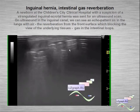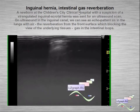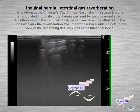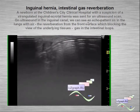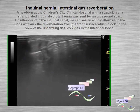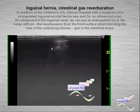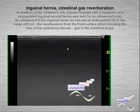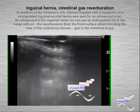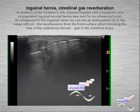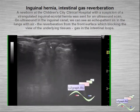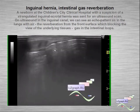In another case, this is inguinal hernia with intestinal gas — a reverberation effect. A newborn with suspicion of strangulating hernia was sent for ultrasound, and we can see the echo pattern of reverberation like a lung echo pattern. We can see the testicle and intestine in the inguinal canal with gas.